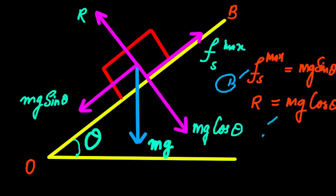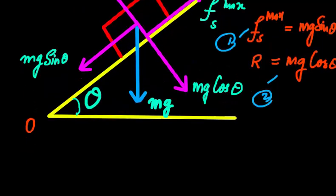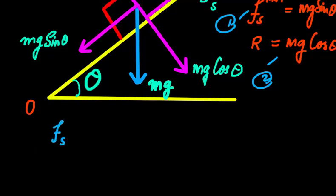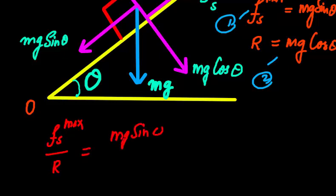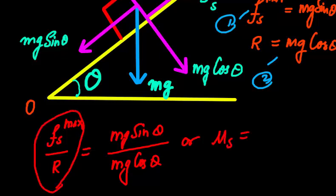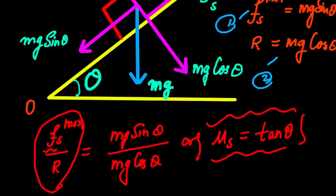These are equation 1 and equation 2. Now if I divide these two equations, the conclusion will be: fs max over R equals mg sin theta over mg cos theta. Since fs max over R equals the coefficient of static friction, mu s equals tan theta. Therefore, the coefficient of static friction is always equal to the tangent of the angle of repose.